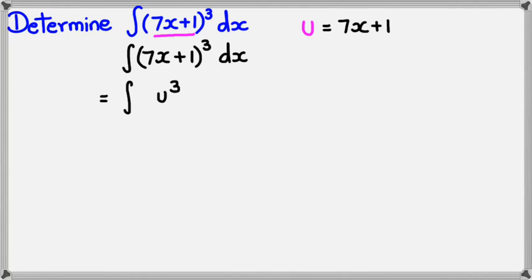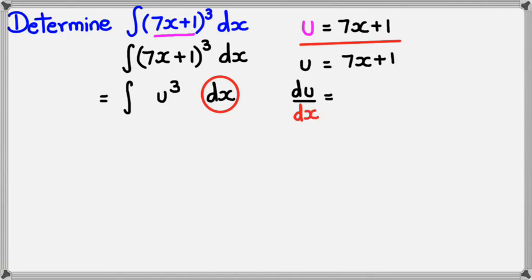Now with integrating u, you can't have dx, so you need to change dx to du. And the way we're going to do that is we're going to go back to our original function, which is u = 7x+1, and we're going to differentiate it. So if u = 7x+1, we know that du/dx is just the differentiation of 7x+1, which equals 7. Now what we're going to do is rearrange so that dx is by itself and we'll have du and everything else on the opposite side.